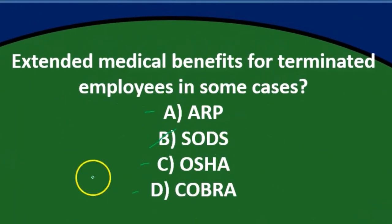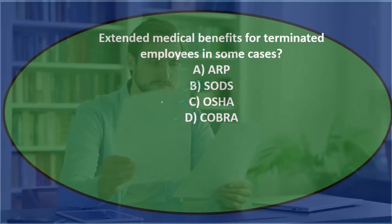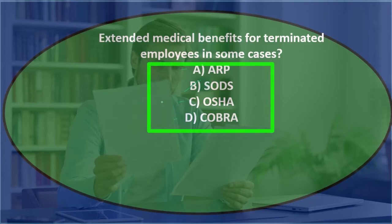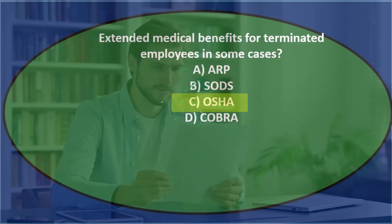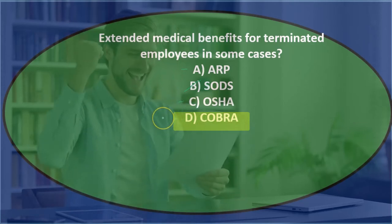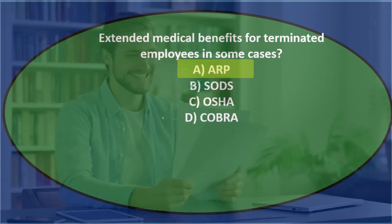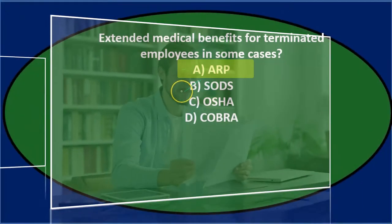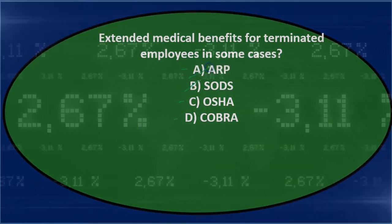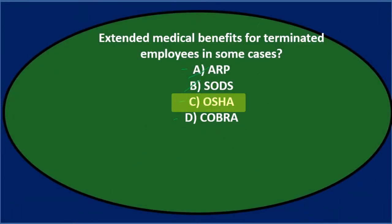These acronyms aren't as familiar to most people — they might just have a better understanding of what these things are doing. OSHA might be more familiar as something that has to do with safety, and COBRA is one that generally has to do with health coverage. ARP could be Address Resolution Protocol, which might sound familiar, but I'm going to say A is not going to be it. The most familiar two is probably going to be OSHA and COBRA.